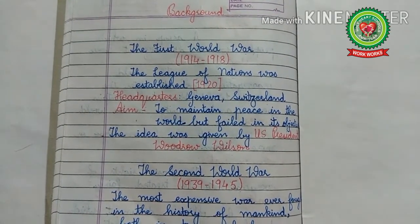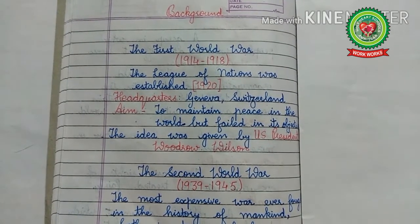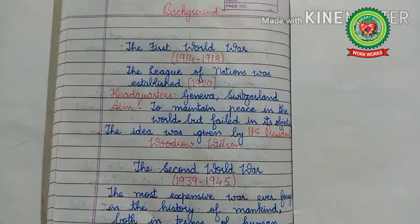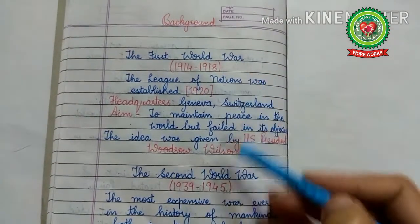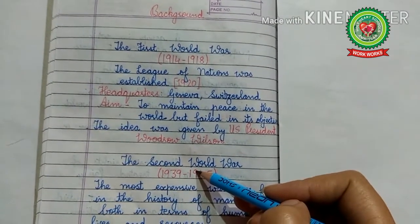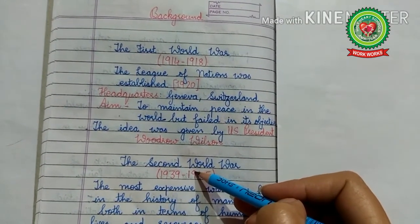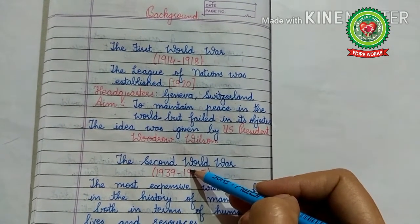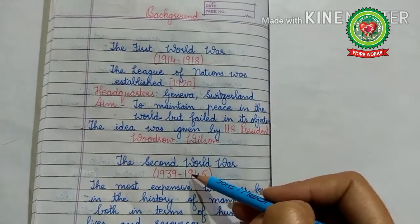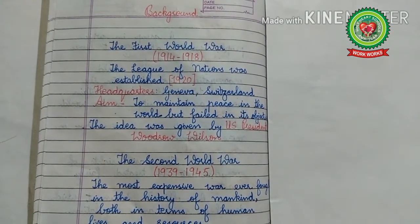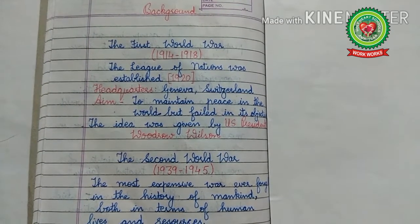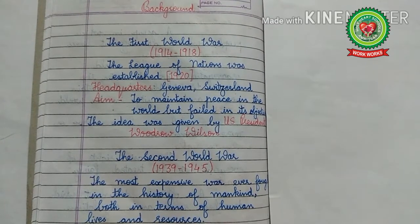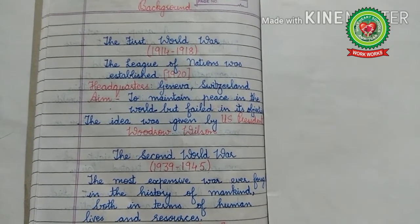Before starting the topic, you must know why the United Nations was formed. The 20th century saw two world wars. Both the First and Second World Wars brought death, destruction, famine, hunger, diseases, poverty, and grief for millions of people. The loss of men, money, and human suffering all over the world made leaders realize that no problem could be solved by wars, and it should be avoided at any cost.